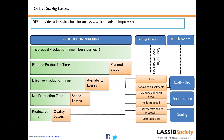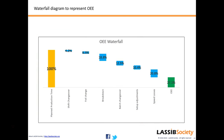Now we talk about the waterfall diagram to represent OEE. This is a very useful graphical representation that helps you understand which are the major losses and which are minor, where to focus, whether the loss should have occurred, and what countermeasures and mitigation plans can prevent these losses in the future. As Peter Drucker said, if you are not measuring it, you cannot manage it — when you start measuring and seeing, you start planning actions against it.